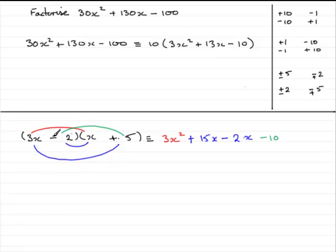If we'd had the wrong signs here, all we'd have got would have been minus 13x and we would have known that we've got to switch the signs only. Okay, well we've got it there then.